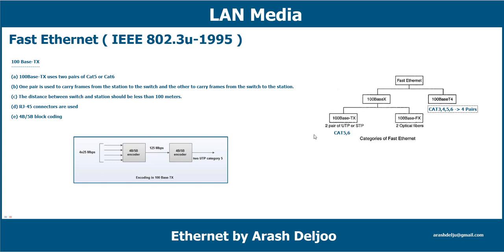About 100Base-TX: it uses two pairs of category 5 UTP or two pairs of STP cables, or category 6, to connect the station to the switch or hub. One pair carries frames from the station to the switch, and the other carries frames from the switch to the station. The distance between the switch and the station should be less than 100 meters. We use RJ-45 connectors for 100Base-TX. For coding, we use 4B/5B block coding to provide bit synchronization.